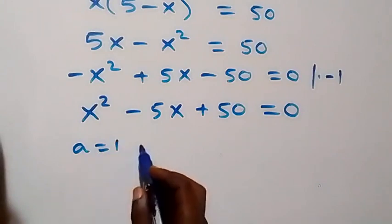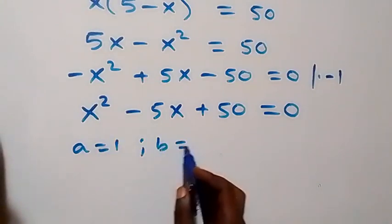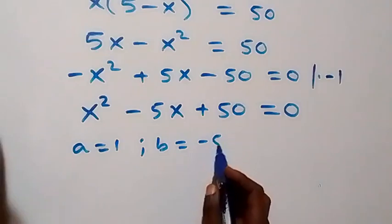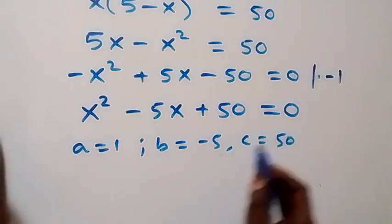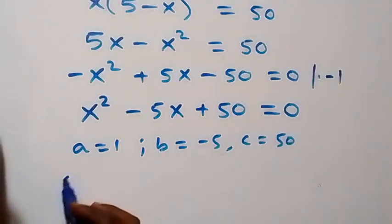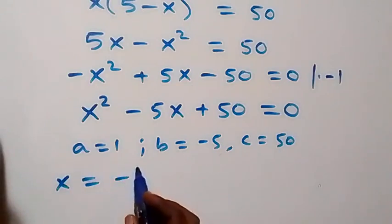We now have a quadratic equation where a equals one, b equals minus five, and c equals 50.